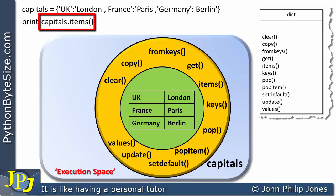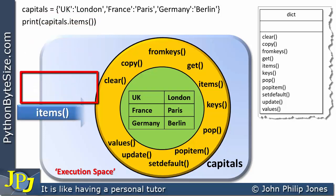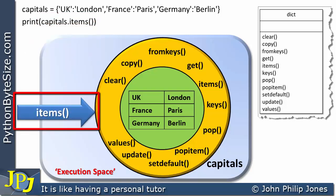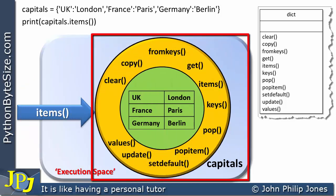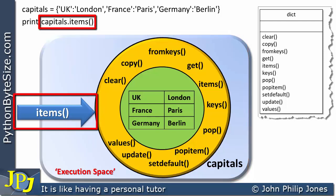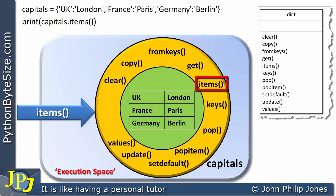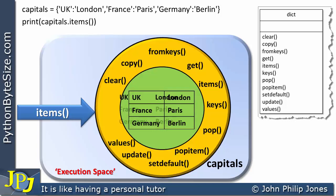Here we can see the actual message — this is the object to which the message is sent, and this is the method that's going to be invoked within the object. I can represent this message diagrammatically, as shown here by this particular arrow, moving the message to the actual instance of the dictionary class, i.e. the object. This message is going to invoke the items method, and the code inside items is going to look to the three items and return them — the key-value pairs.